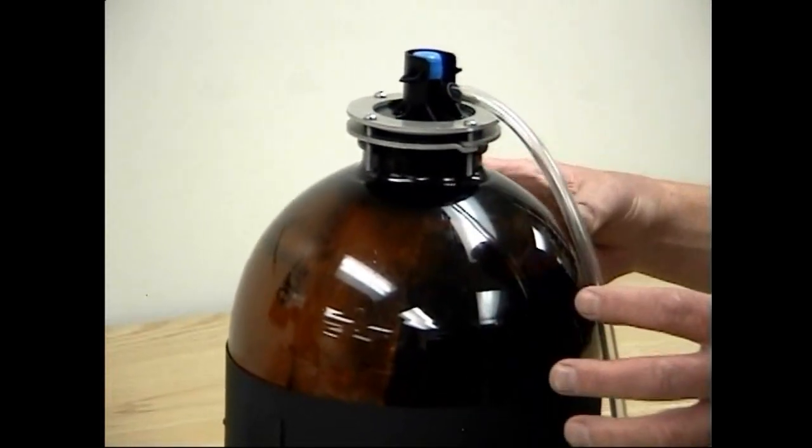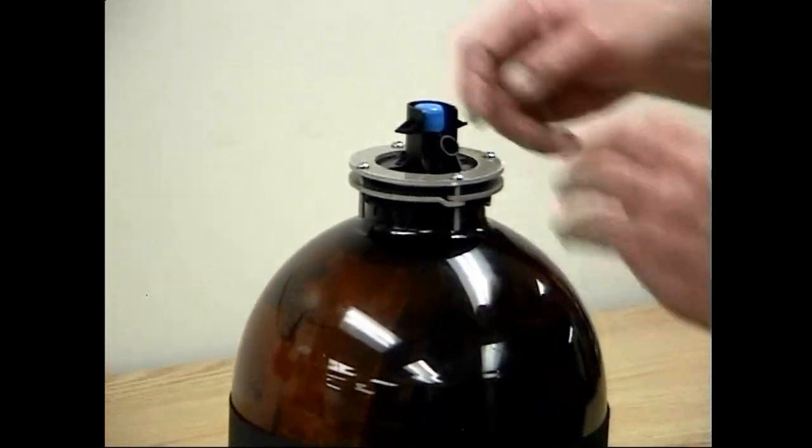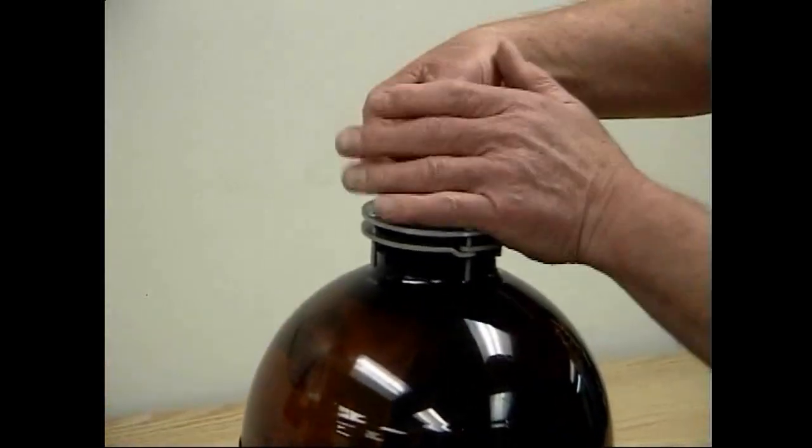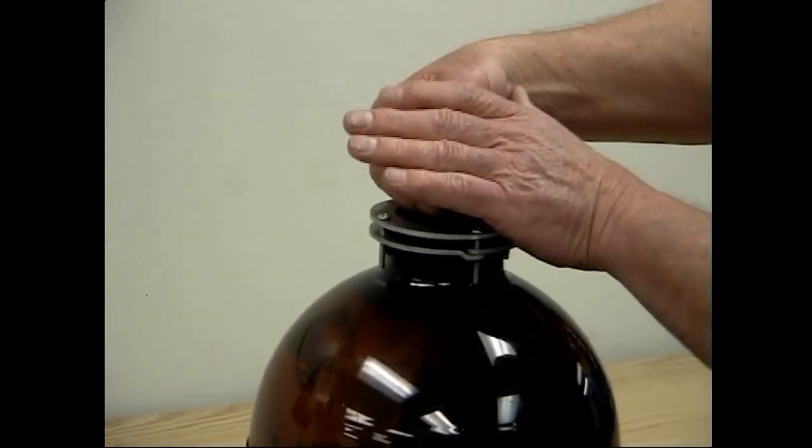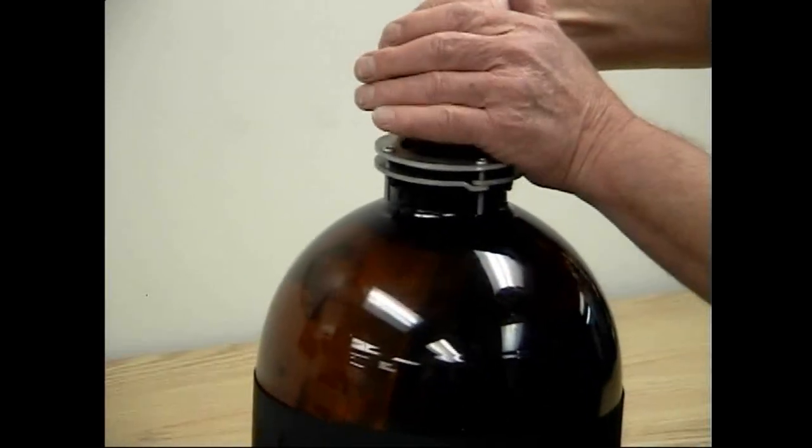Then we let it set for a couple of minutes, which we've already done. Disconnect the hose, and then we go ahead and press the button. And I'm putting my hand over the nozzle just so I don't get squirted, and you'll watch the level come up and liquid come out the valve.